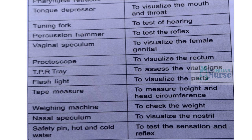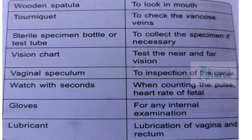Tape measure — to measure height and circumference. Weighing machine — to check the weight. Nasal speculum — to visualize the nostrils. Safety pin, hot and cold water — to test sensation and reflexes. Wooden spatula — to look in the mouth. Tourniquet — to check for varicose veins. Sterile specimen bottle or test tube — to collect specimens if necessary. Vision chart — to test near and far vision.